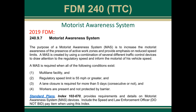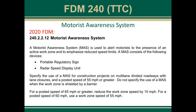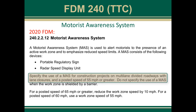The motorist awareness system (MAS) had somewhat unclear requirements for use. Particularly, item three stated a lane closure is required for more than five days, consecutive or not. The intention was that the MAS would be used on all multi-lane facilities that are construction projects — the 'five days consecutive or not' was intended to eliminate its use on maintenance work. Moving forward with the 2020 FDM, it's been simplified to require that the MAS is used for construction projects on multi-lane divided roadways with lane closures and an imposed speed of 55 miles per hour or greater.